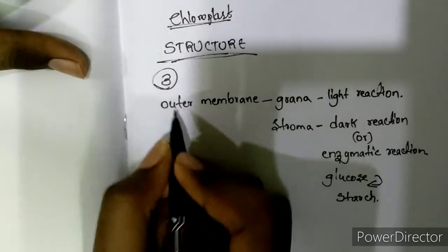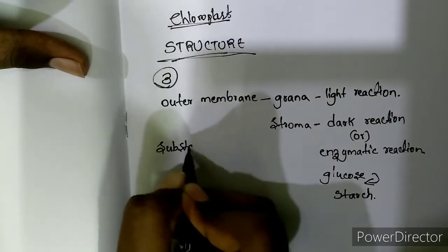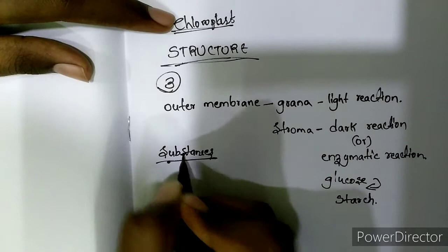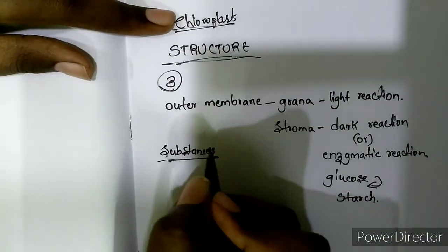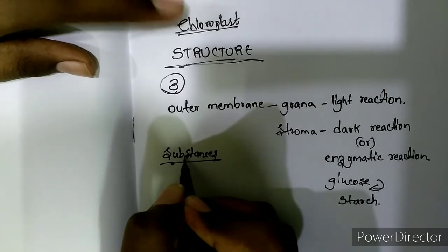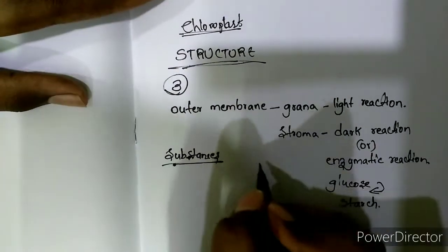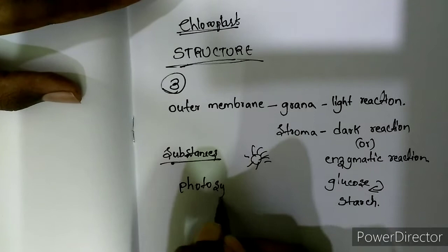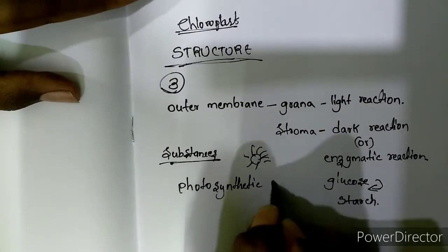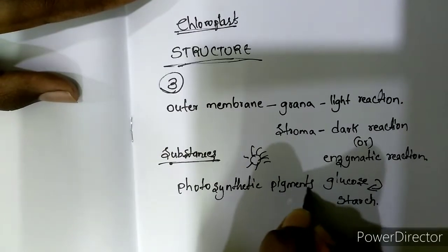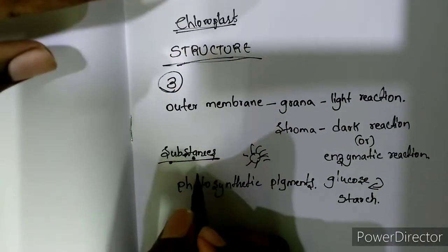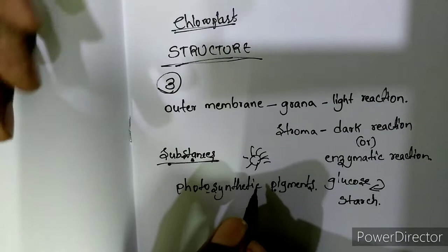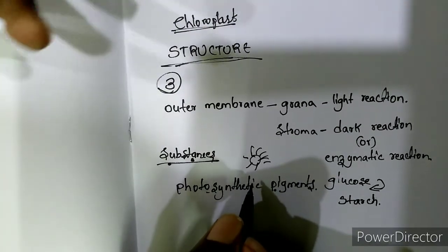Now, there are several substances present in the chloroplast. Some of these substances help in capturing the sunlight. The substances present in the chloroplast that help in capturing sunlight are called photosynthetic pigments.